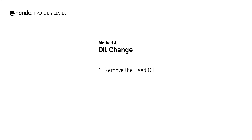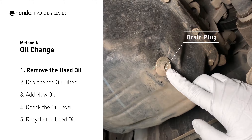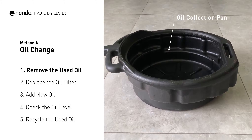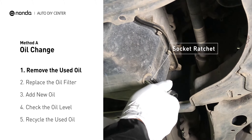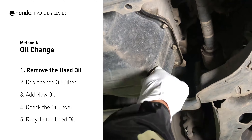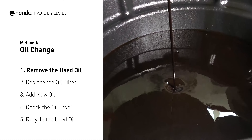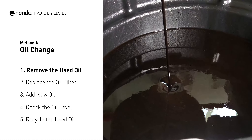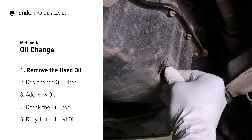Method A: Oil Change. Locate the oil drain plug on your vehicle and place an oil collection pan underneath it. Use the socket ratchet to remove the plug from the oil pan on your vehicle. Once the plug is removed, the oil should start flowing out into your collection pan. Once all the oil is drained, replace the drain plug and tighten it back on.